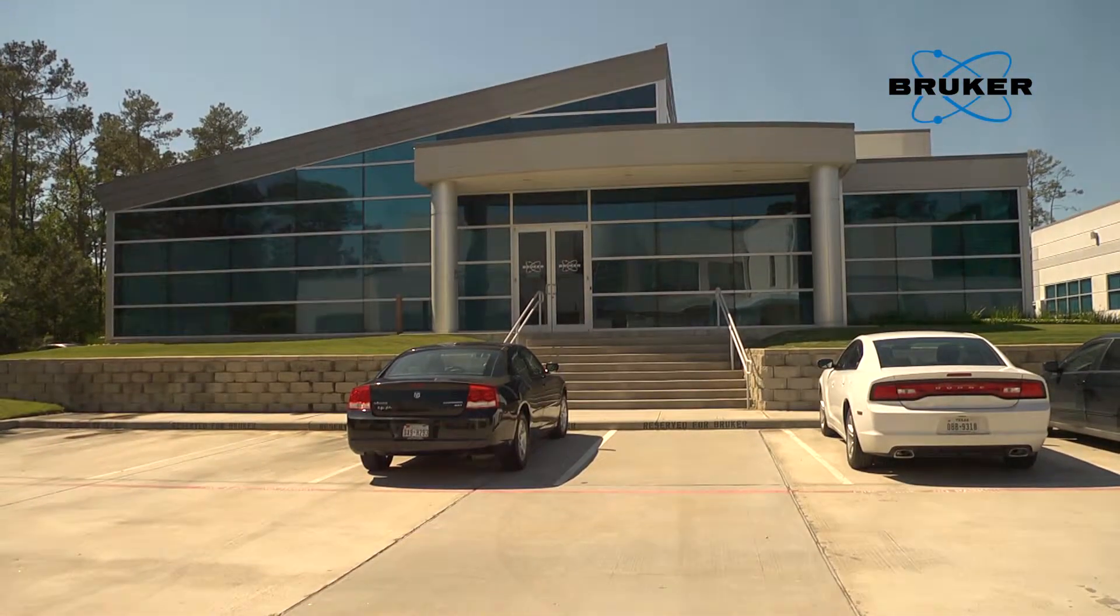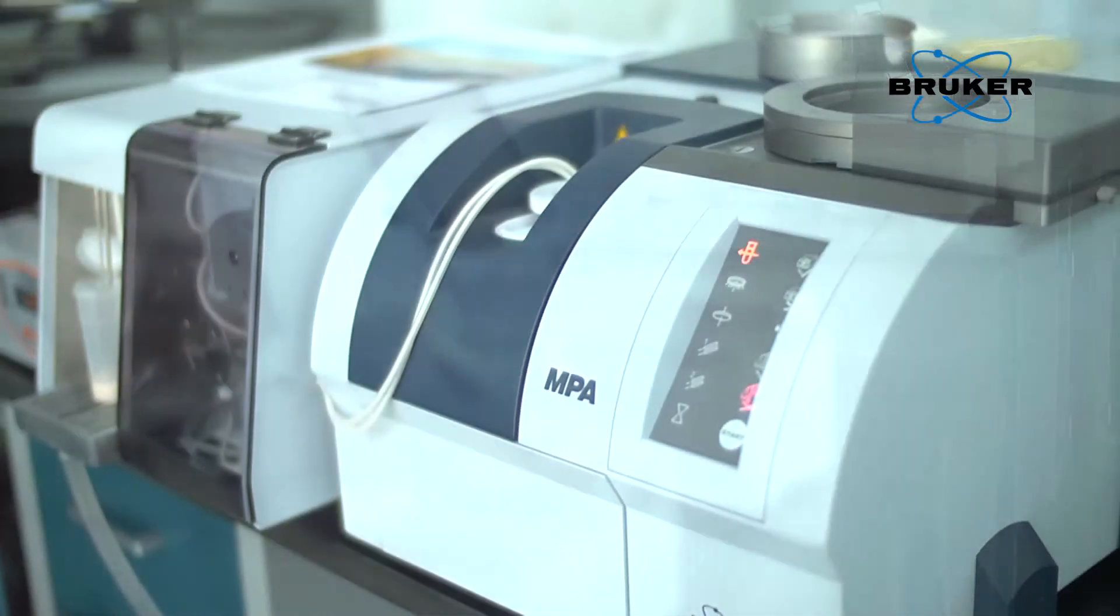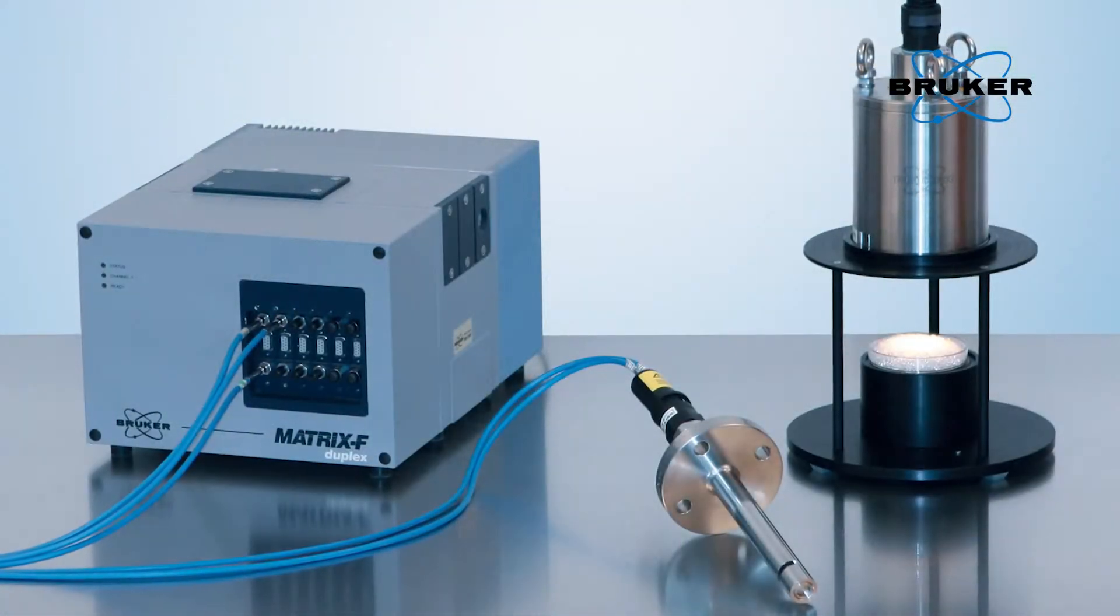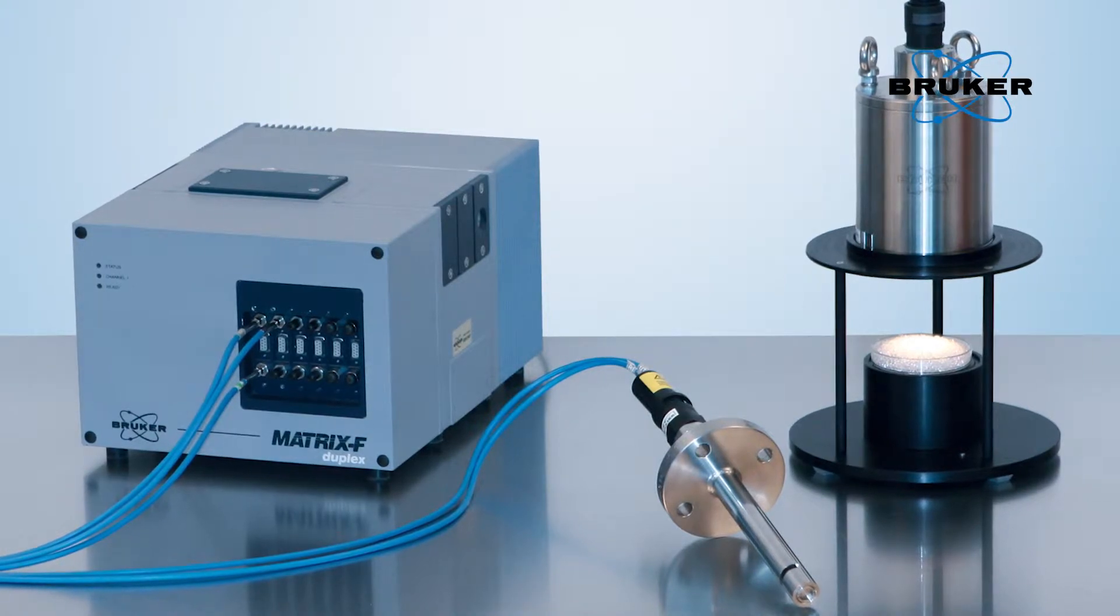Bruker's FT-NIR product line includes the Tango, the MPA, and Matrix I spectrometers for lab and at-line applications, as well as the Matrix F series for process control.